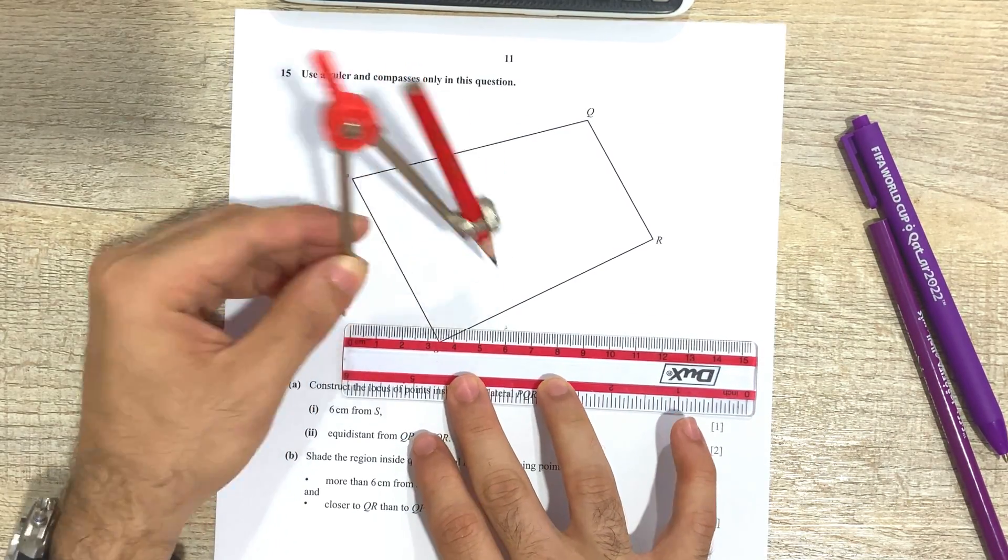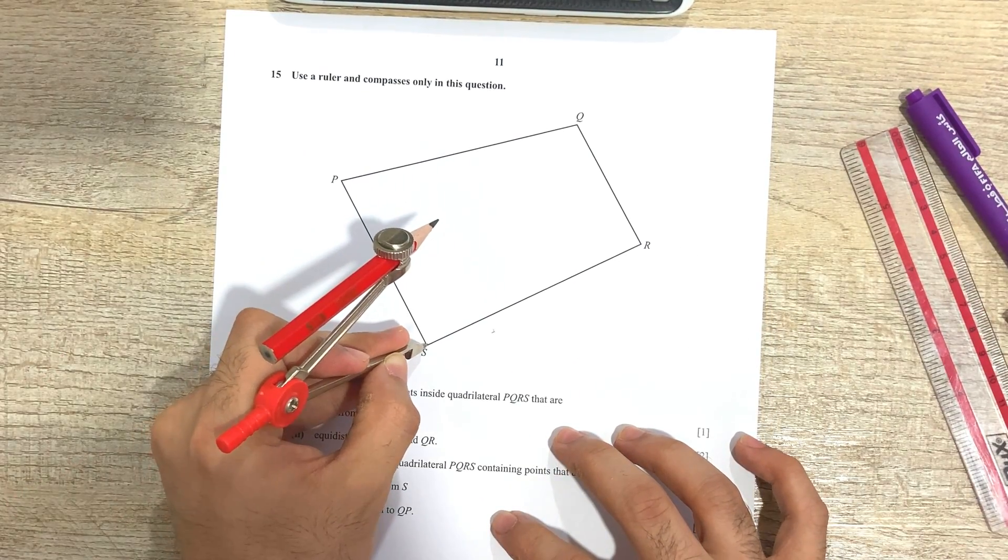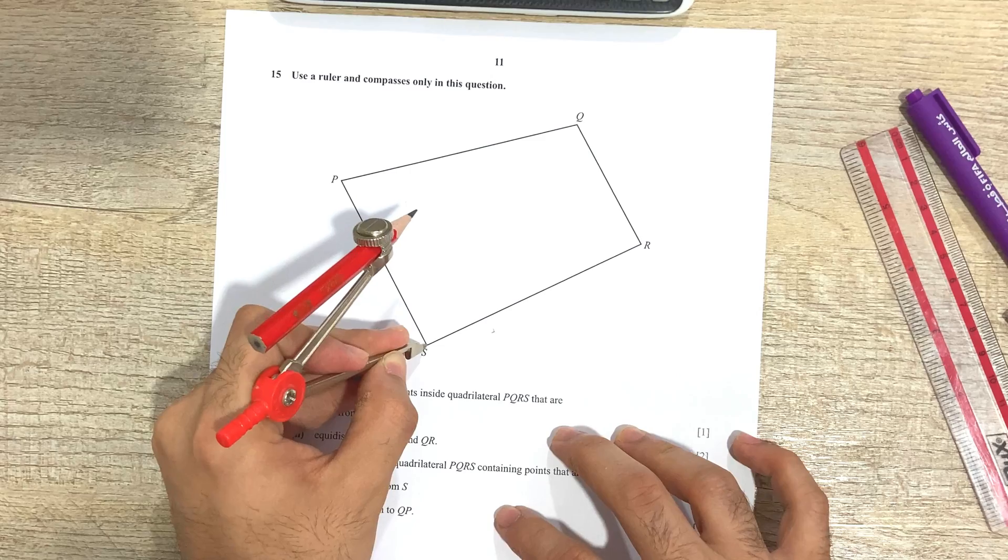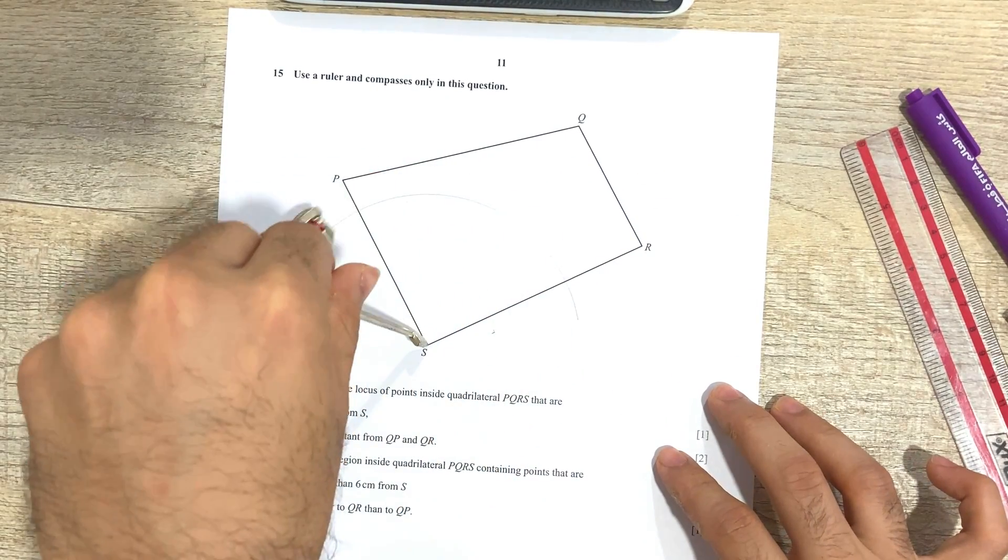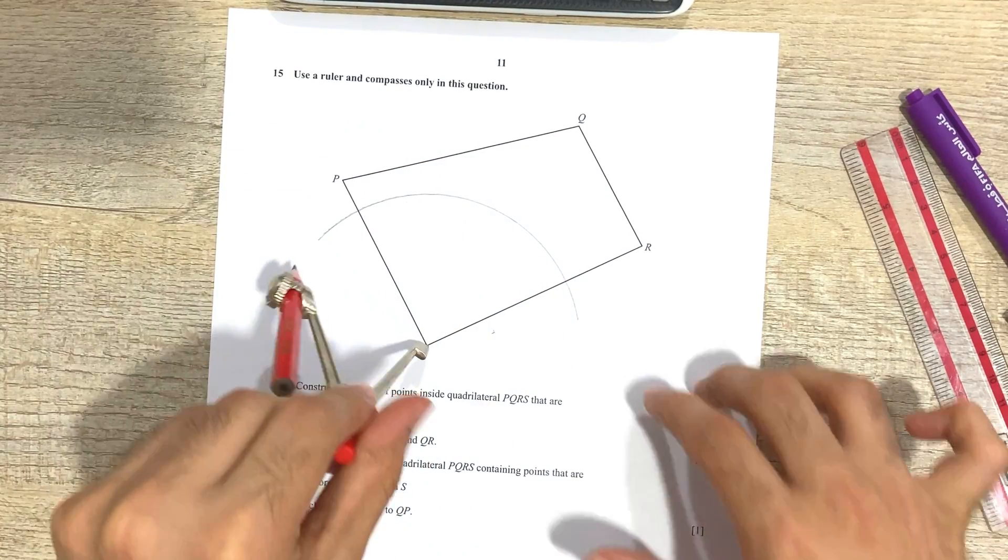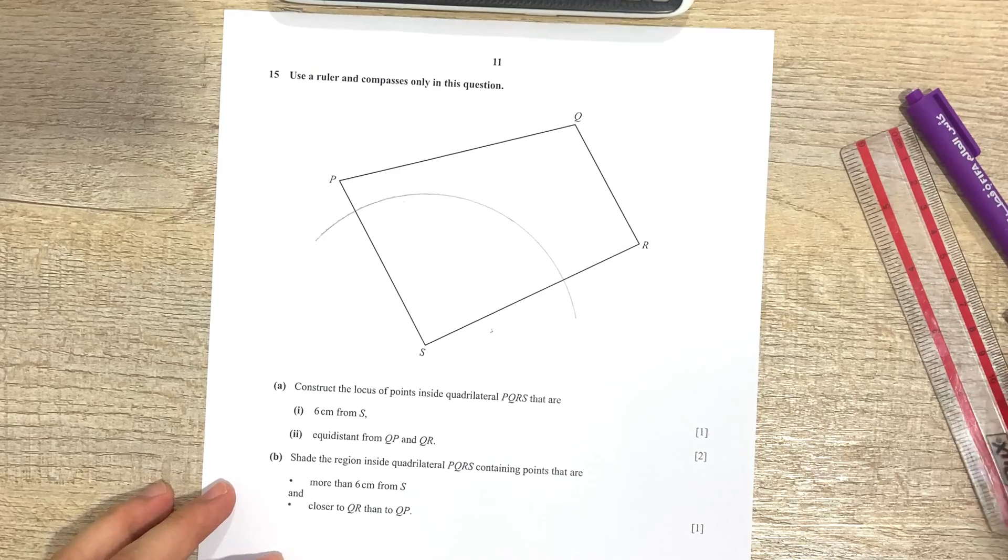And then I'm going to place my compass, the pointed side, at S and make an arc which is of 6 centimeter. And I'm only going to cover the part that's inside the quadrilateral, and of course a bit outside of that, but there's no need to make an entire circle. Okay, so that's that.